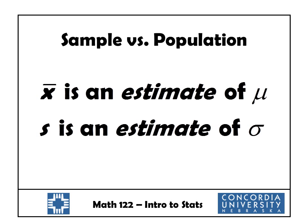An important point: x-bar, the sample mean, is an estimate of mu, the population mean. S, the sample standard deviation, is an estimate of sigma, the population standard deviation. Typically we want to know about the entire population, but calculating those values exactly would require data from every single member — which is very difficult or impossible. So instead we get data from a sample and use those sample statistics as estimates.